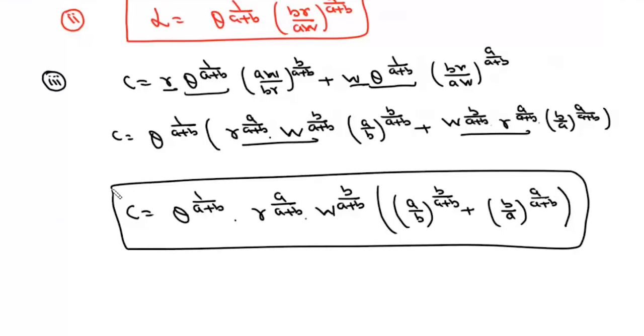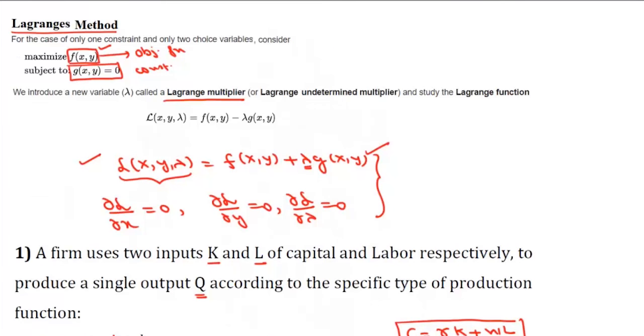We have worked out all three cases. Once we are given an objective function with an equality constraint, we can always use Lagrange's method to find its optimal solution.